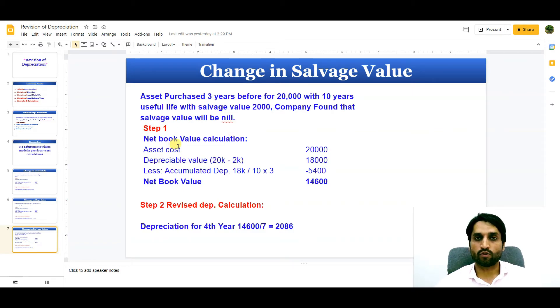So step one first of all we need to see our book value. Now asset cost 20,000. Depreciable value 20,000 minus 2,000 which will be 18,000 because 2,000 is our salvage value. Now less accumulated depreciation is 18,000 divided by 10 years by 3. So 5,400 accumulated depreciation. Now the net book value is 14,600. Now this net book value will be divided by further 7 years because we do not have residual value or the salvage value which is nil. So this total book value will be going to divided by 7 years. So depreciation for fourth year will be 14,600 divided by 7 is equal to 2,086.